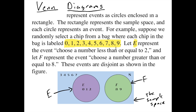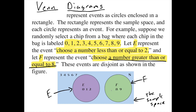Event E is choosing a number less than or equal to two, and event F is choosing a number greater than or equal to eight. The outcomes for F are eight and nine. The outcomes for E are zero, one, and two. We put those numbers into the diagram.